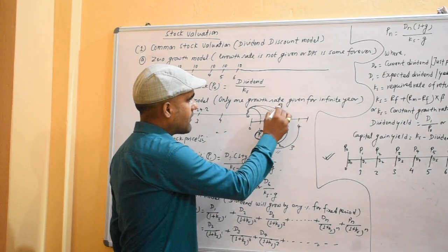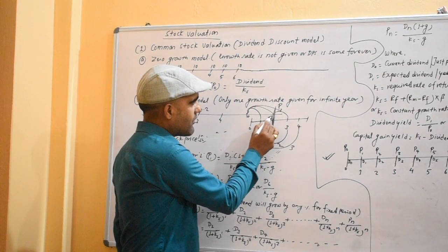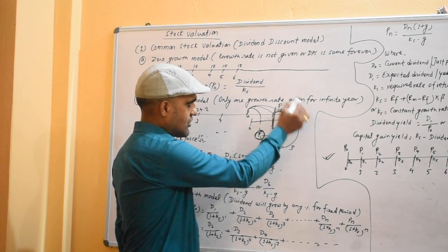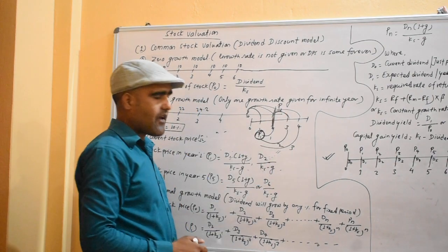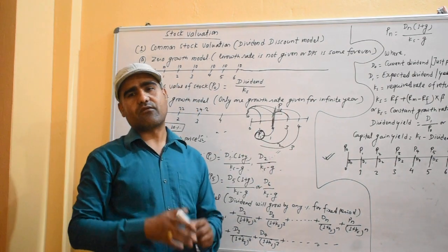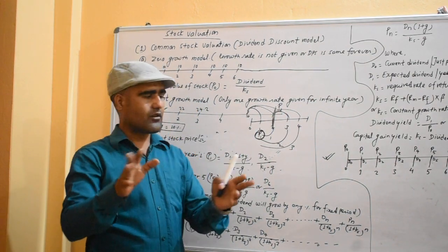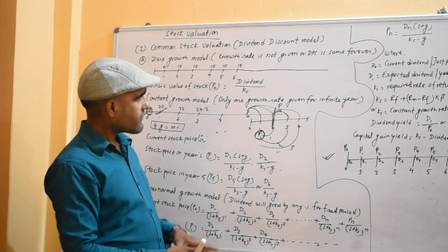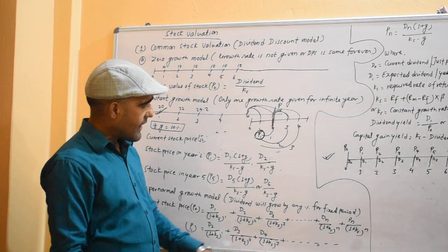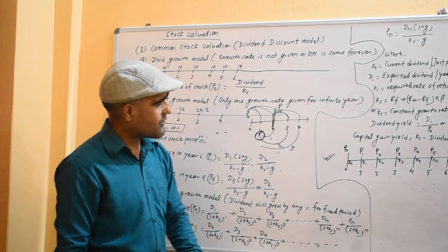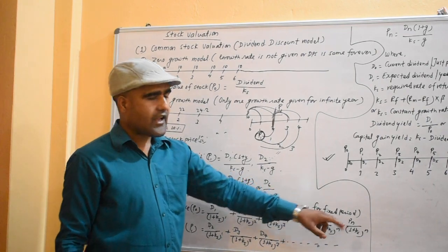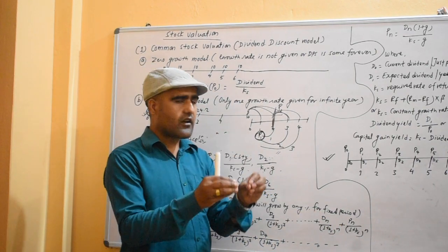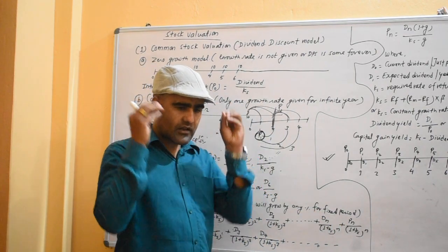If you have the same value, you will have to take it to period 3. What is the value of P3? This is 1, 2, 3. This is the formula. This is the value of P3.